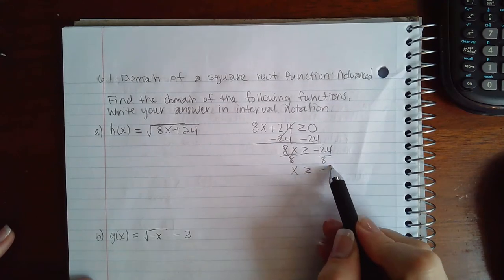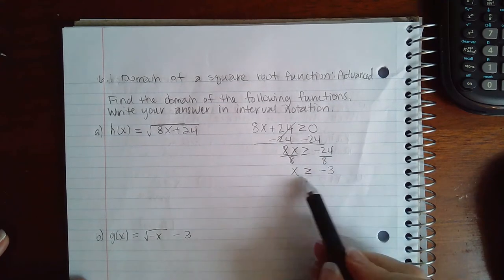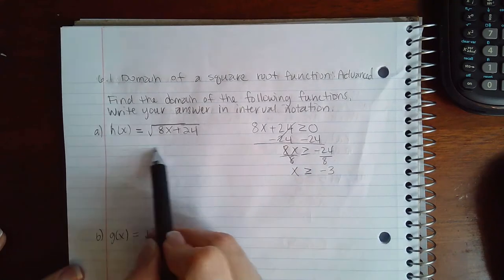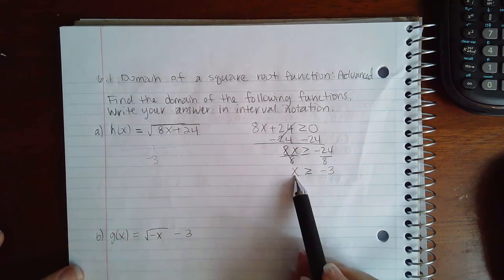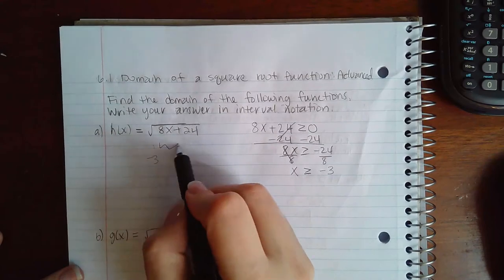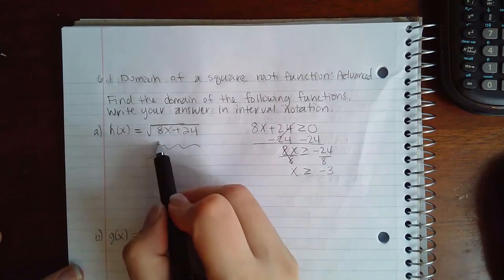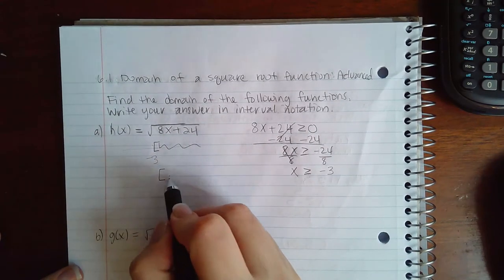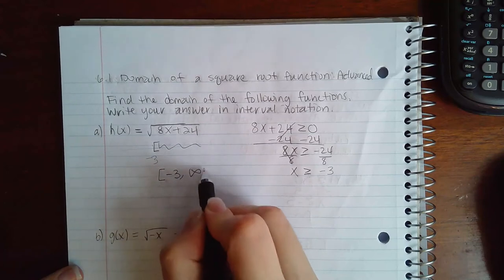And then I can perform my division. How do I write that in interval notation? Here's negative 3, and it means x's are greater than negative 3. Because of the bar it's going to have a bracket, so my domain is negative 3 to infinity.